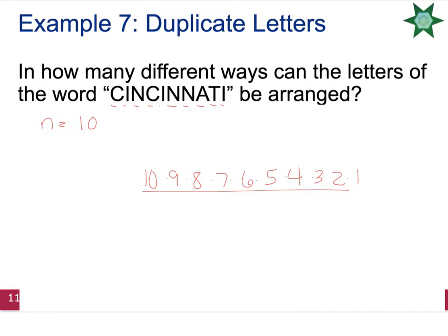Then I need to find the number of repeated letters. So let's start with the C's. There are two C's, so I'll put 2 factorial down for the C's. Then I have the I's. There's 1, 2, 3 I's. So I'll put 3 factorial down for the I's. Then my N's. There's 1, 2, 3 N's. So I'll put 3 factorial down for the N's.